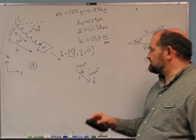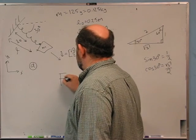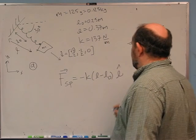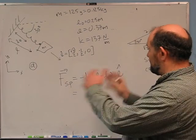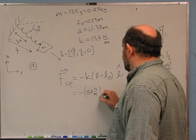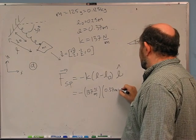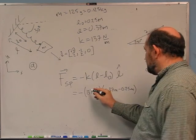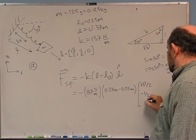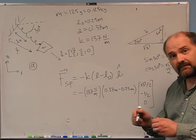Second question: What is the force of the spring on the block? We know the force of a spring on the thing it's connected to is −k(L − L₀)L-hat. I already have all these numbers, so I'll just plug in: −137 N/m × (0.37 m − 0.25 m) × (√3/2, −1/2, 0).